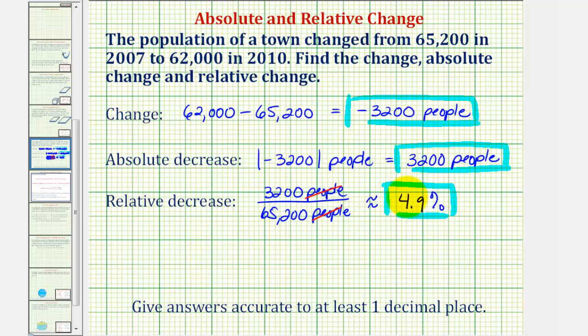Now if we were asked to find the percent of change, meaning we're not indicating whether it's an increase or decrease, we would leave it as a negative 4.9 percent to indicate that it's a decrease of 4.9 percent.